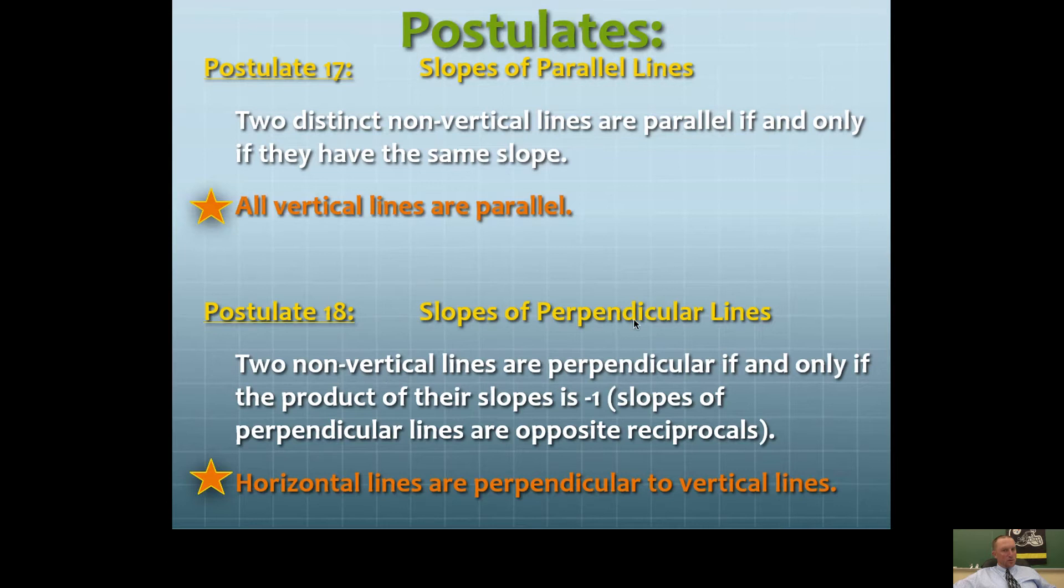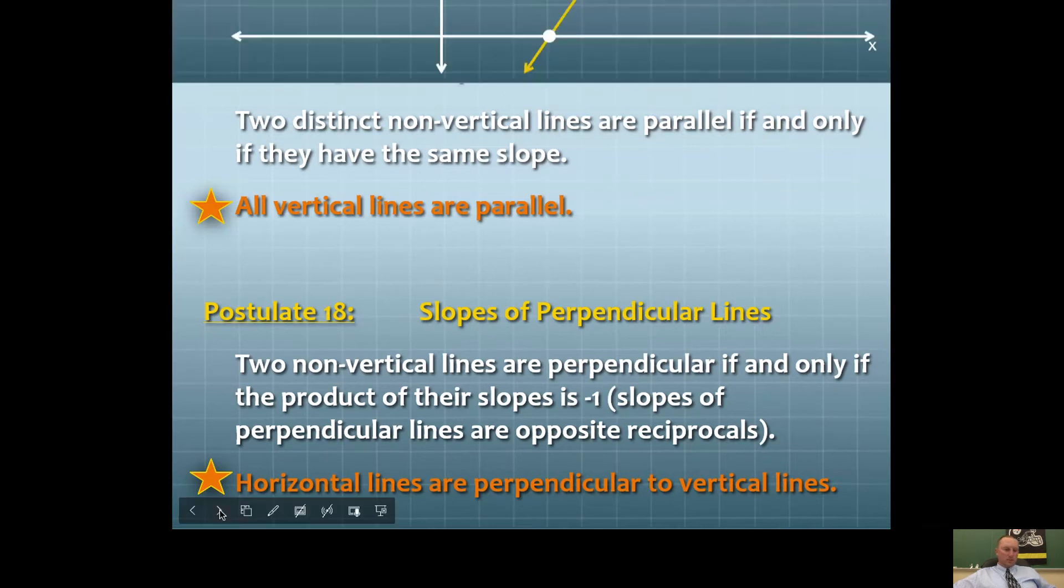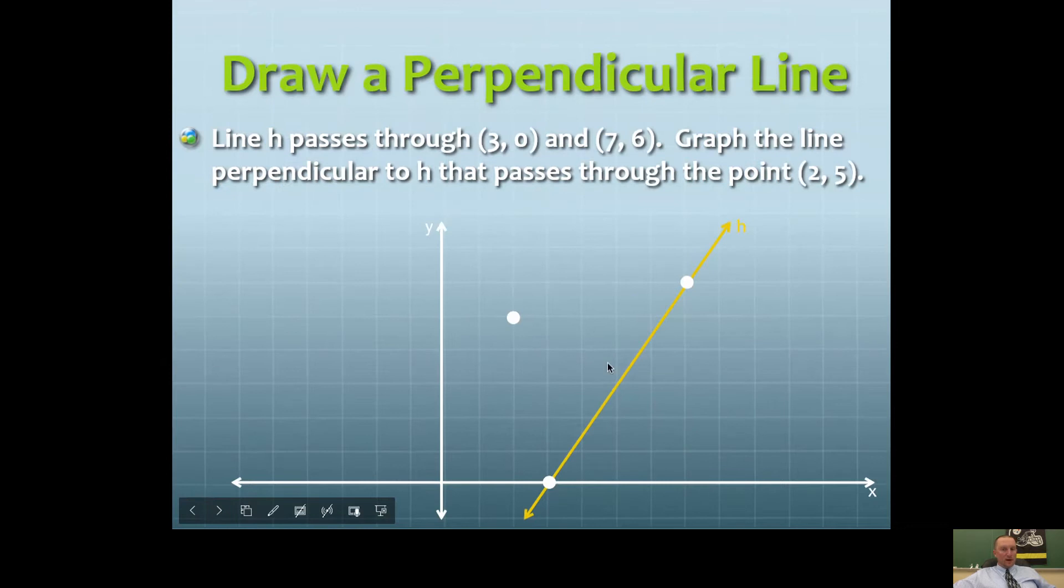Okay, so slopes of perpendicular lines, that's what we need: opposite reciprocals. You can find the slope of this line, so let's do that. I'm going to do it just by counting.